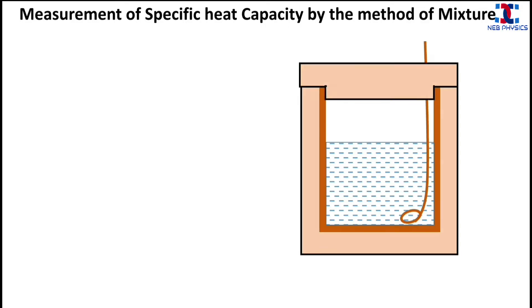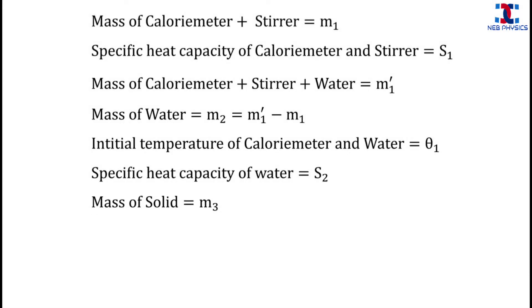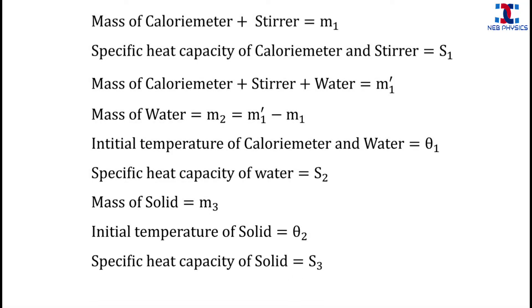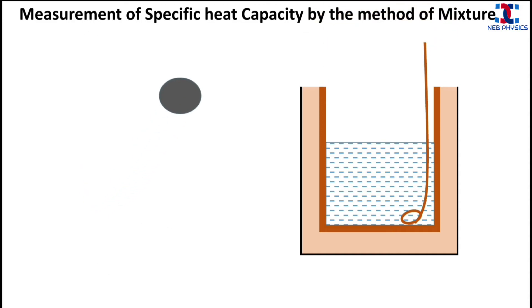The calorimeter is inserted into the wooden frame to insulate it from the surrounding. Next, we take a solid of known mass and unknown specific heat capacity, and heat it by passing steam inside the steam chamber. Let this solid be heated to temperature theta2. The given mass of the solid is m3, its initial temperature is theta2, and its specific heat capacity is S3, which is what we need to find.